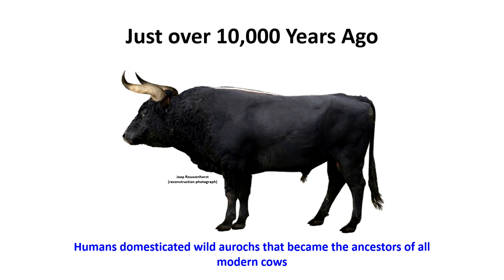This is not a cow, but it was domesticated into what we call the cow. This is an image of what's called an auroch. This is not an actual photograph — it's a reconstruction because these animals are extinct or have been bred into a different form.